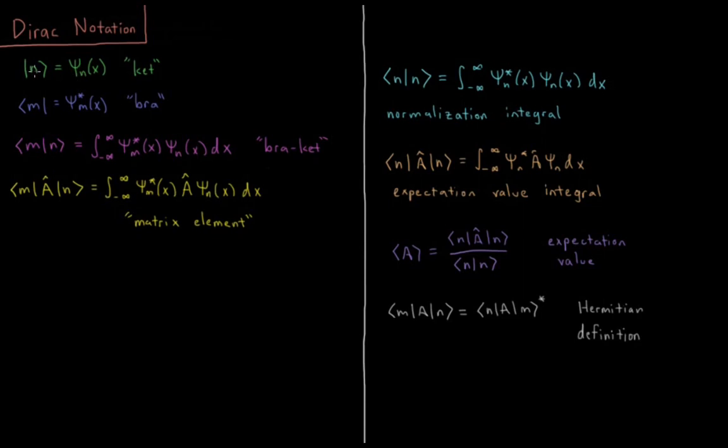This is generally a letter here as a specific eigenfunction of the Hamiltonian, so we call this a ket vector, being vertical bar and then a greater than symbol on the right.